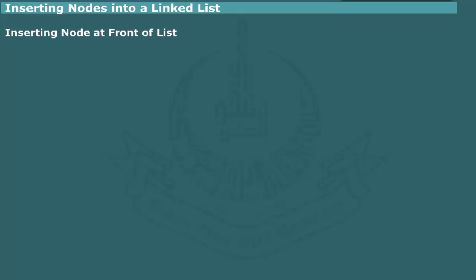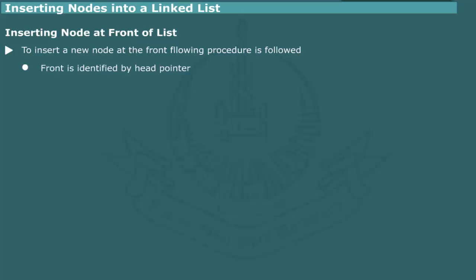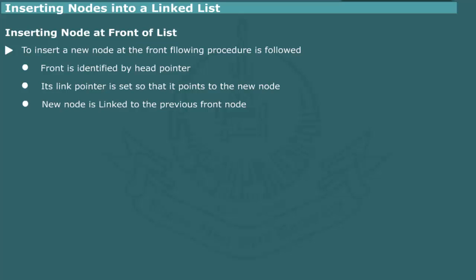Inserting a node at the front of a list. In order to add a node at the front of a list, we create a new node and set its link pointer to point to the pre-existing first node. The front is normally identified by the head pointer. Thus, the head pointer is reset so that it points to the new node.